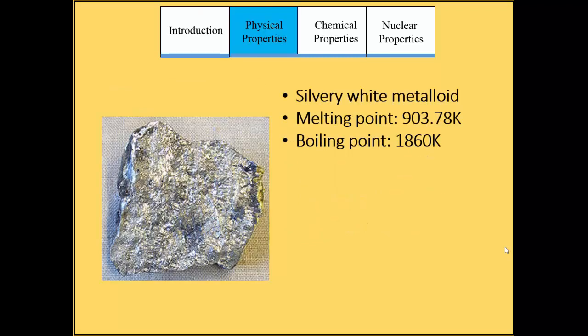Antimony is a silvery white metalloid found in nature mainly as diphnite or valentinite. It is a poor conductor of heat and electricity. It is mainly used in alloys, polymer-tired materials, plastics, glasses, and ceramics. It is also used in batteries, low-friction metal, and sheathing.